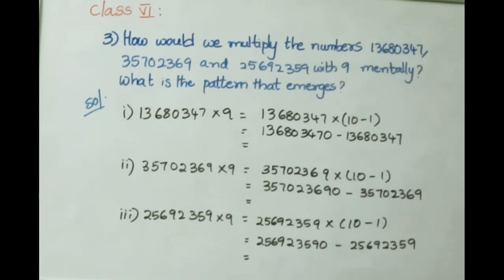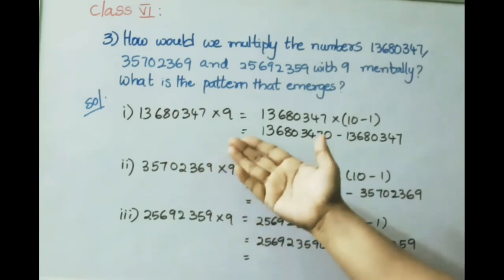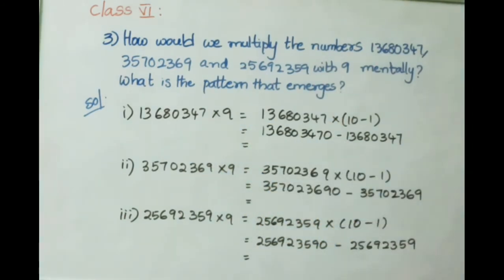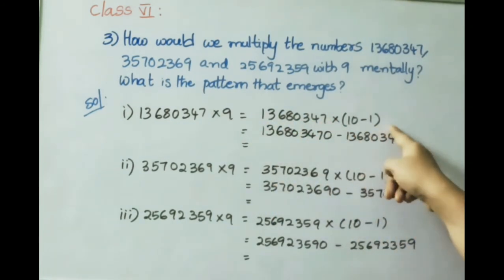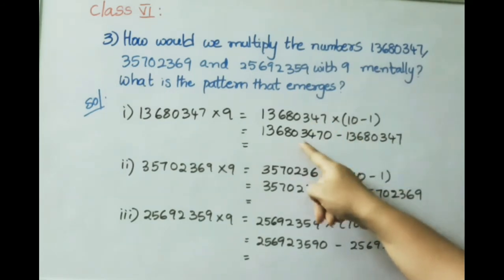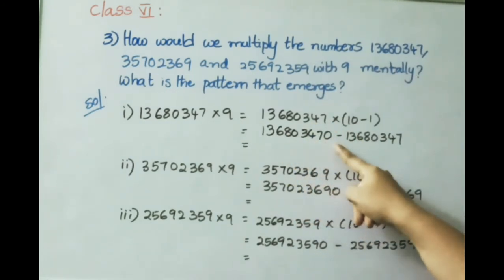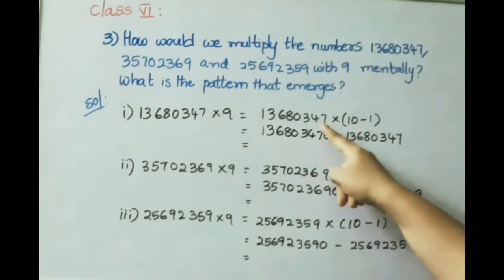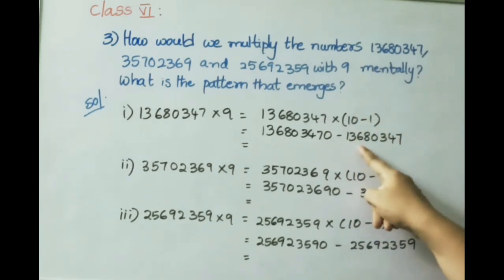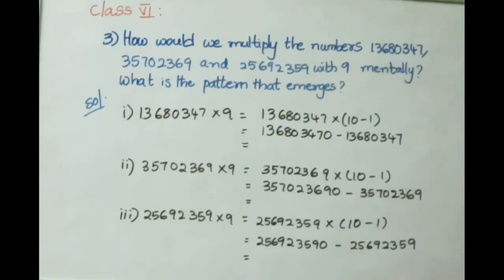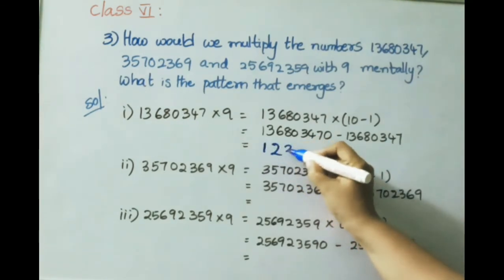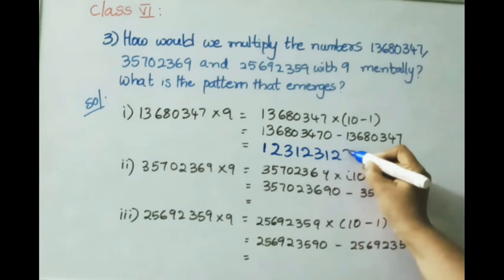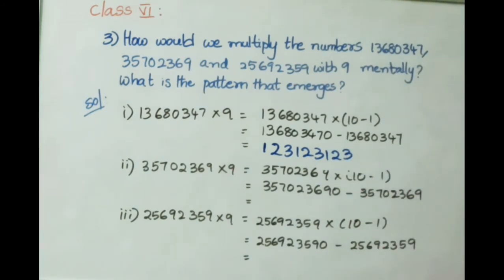Solution: For 1 crore 36 lakh 80,347 multiplied by 9, we write 9 as 10 minus 1. Multiply the given number by 10 to get 13 crore 68 lakh 3470, then subtract the original number 1 crore 36 lakh 80,347. The answer is 12 crore 31 lakh 23,123.